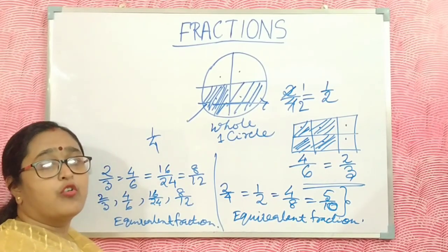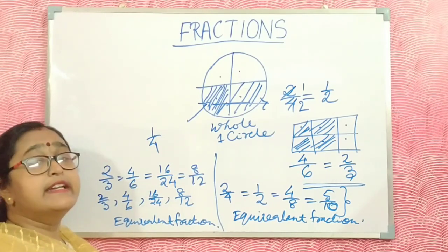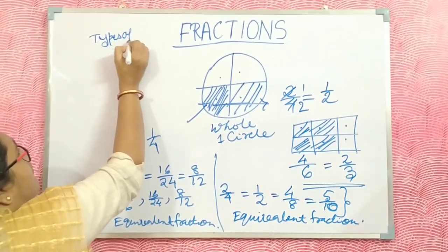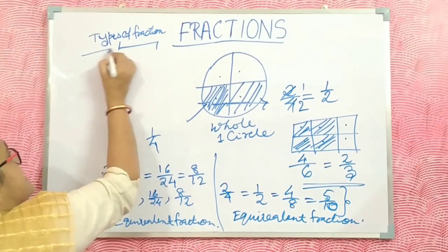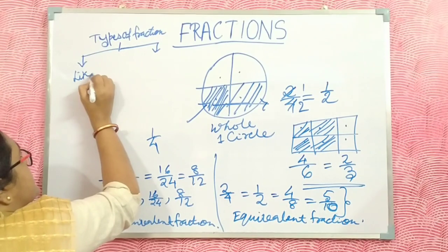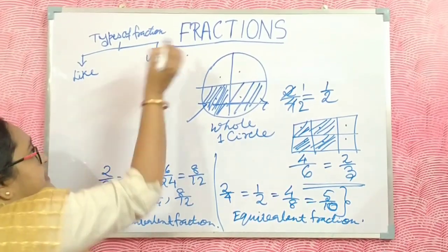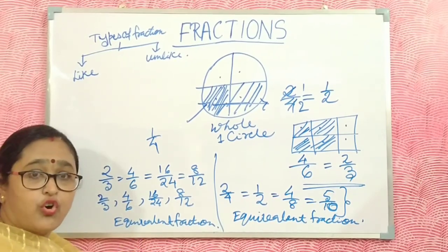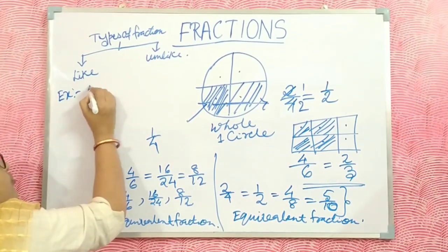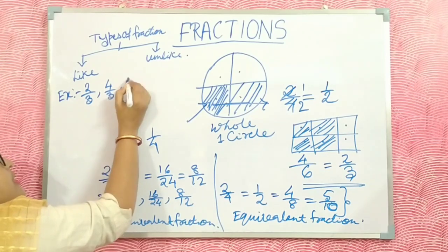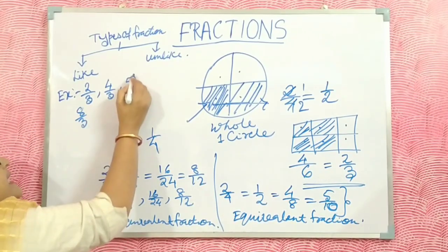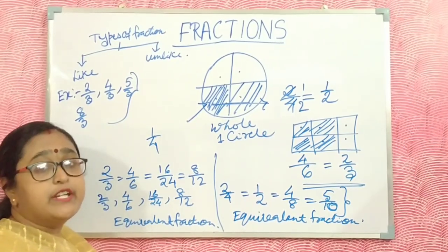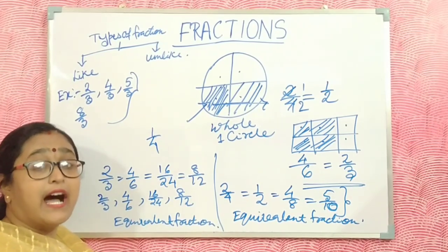Fraction is the part of a whole. Now I discuss the Types of Fractions. The first type is Like Fractions and the second is Unlike Fractions. The fraction having the same denominator is called the Like Fraction. For example: 2/3, 4/3, 5/3, 8/3 — these are Like Fractions because the denominator is the same.